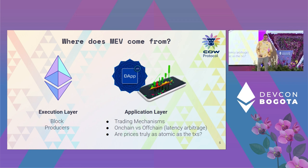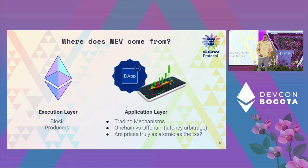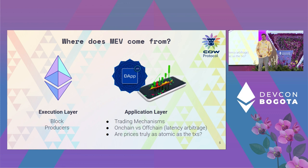Where does MEV come from? MEV comes from two places: the execution layer and the application layer. In the execution layer, it comes from the fact that block producers have this hidden power to order transactions as they will, and data shows they are constantly doing this. It also comes from the application layer because the different trading mechanisms you use when interacting on Ethereum will expose you to less or more MEV, so be careful choosing your trading mechanism when executing trades on Ethereum.